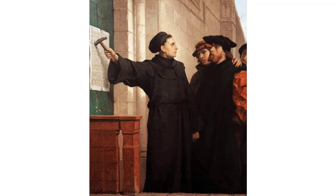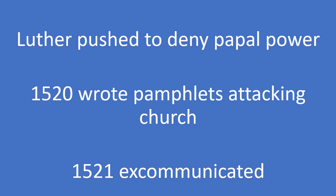In 1519, Luther took part in a debate against a learned Catholic scholar who pushed Luther to deny the power of the Pope. The next year, Luther wrote pamphlets that attacked the Church and argued that many of its traditions were unnecessary, as scripture was all anyone needed to be saved. In 1521, Luther was brought before the Holy Roman Emperor Charles V and refused to back down from his beliefs. He was excommunicated by the Church, pushing him to begin creating his own church. The Protestant Reformation was in full swing.